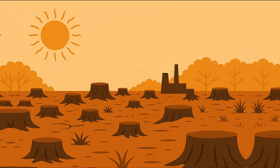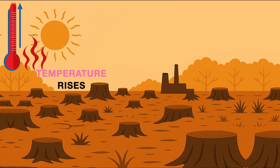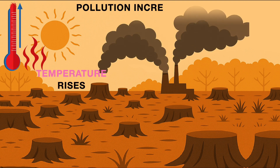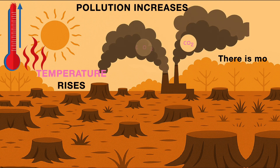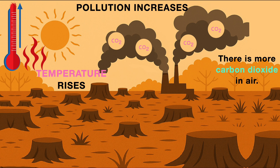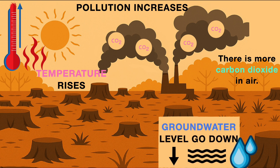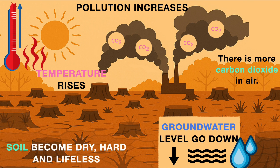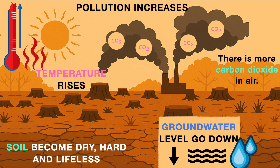And guess what happens? The temperature rises. Pollution increases, which means there is more carbon dioxide in the air than before. Groundwater levels go down, meaning less water is available for consumption. And soil becomes dry, hard, and lifeless. So cutting down too many trees really messes things up — for us and for nature.